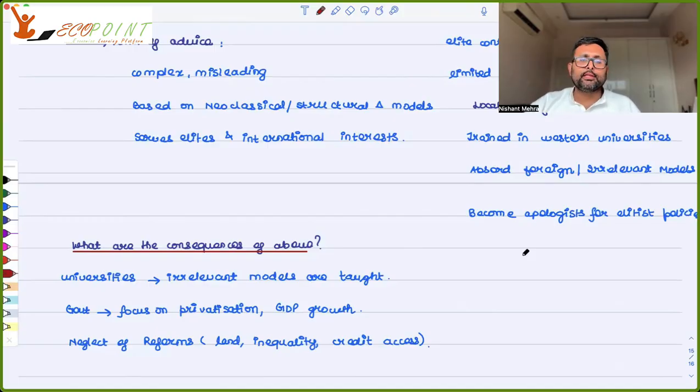And the neglect of reforms is there of all kinds of reforms, land reforms, reduction in inequality, credit access should be there. So if you are following the wrong approach, you have to go somewhere and you're going somewhere else. If you want to go to A and you're following the path of B, how will you reach A? That is the point.